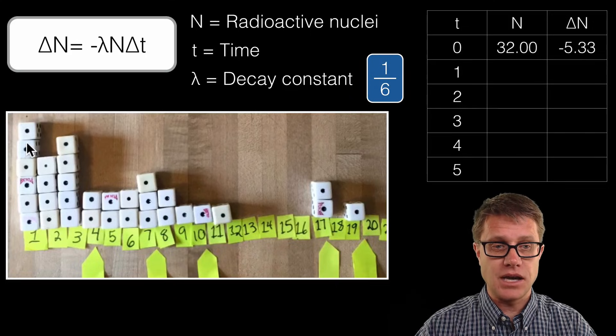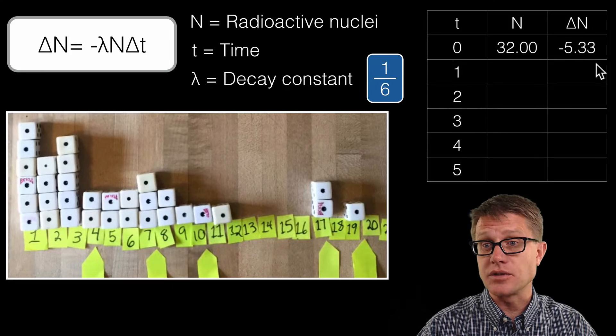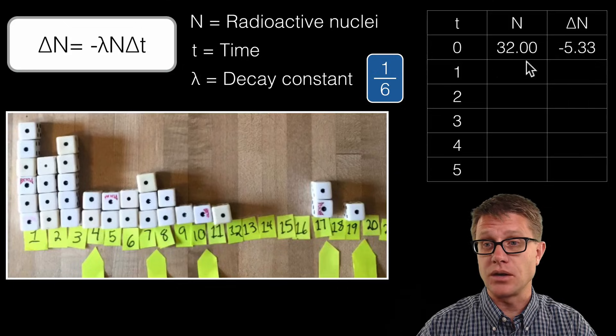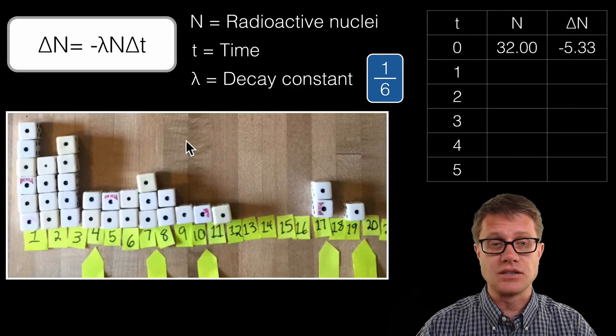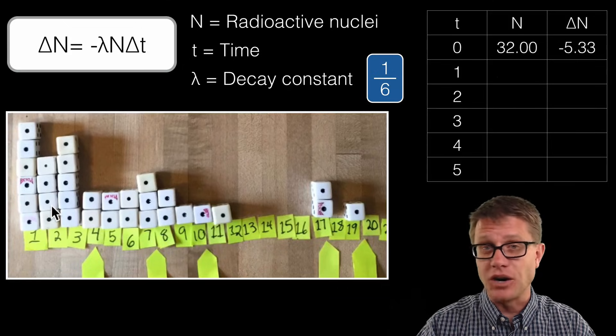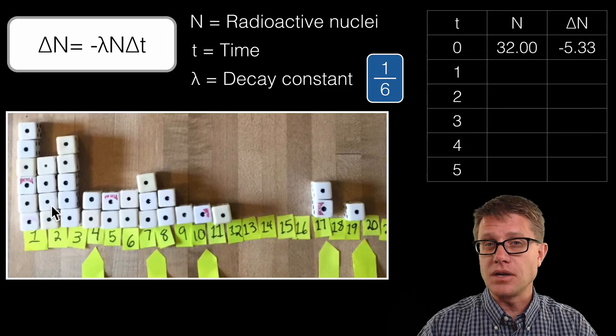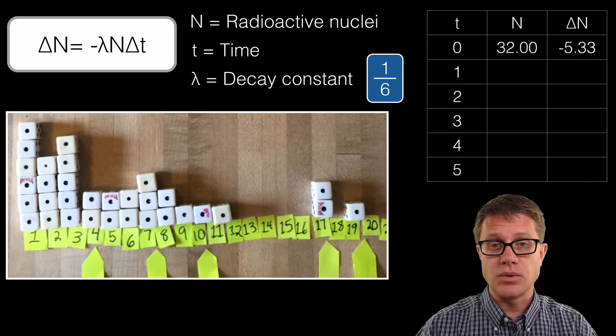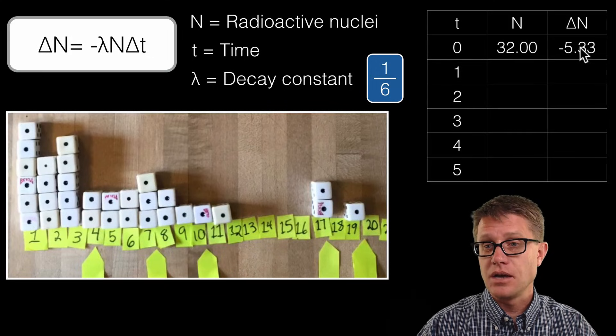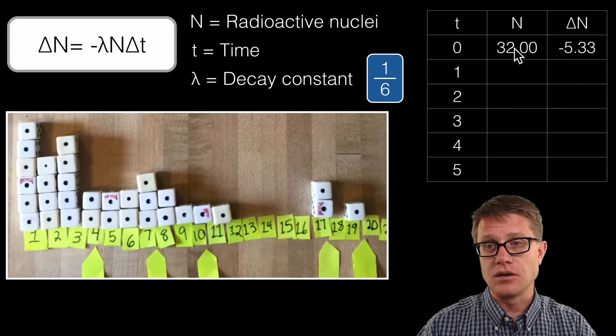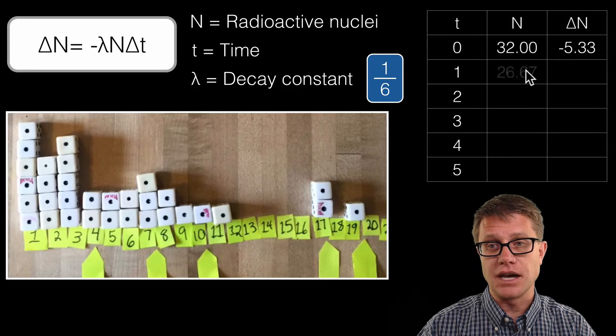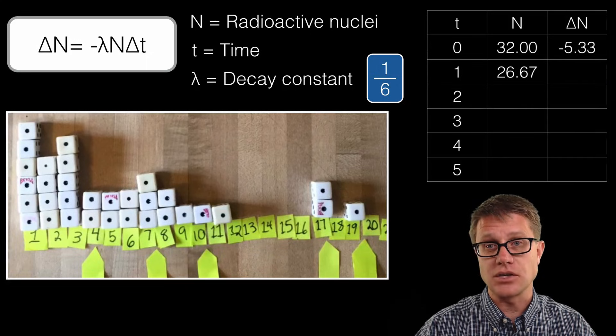Now if we look at how many actually decayed, it is 6, but it is close to negative 5.33. This is what it would predict to be, and this is what we actually got with a really small number of dice. Now how do you do the next one? Well, what we have to do is take that 32. These ones decayed, so we are going to take 32 minus 5.33, and that is my N value for the next generation.